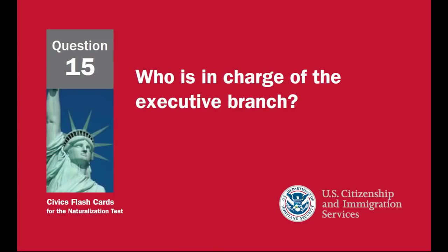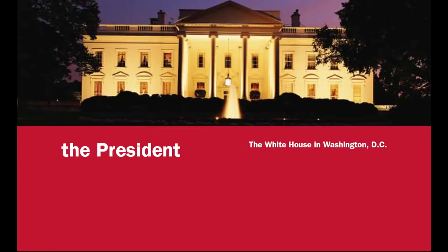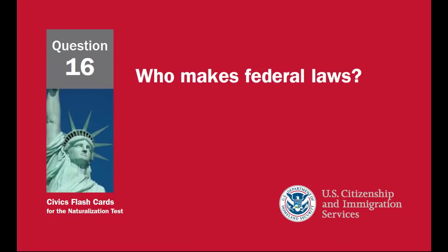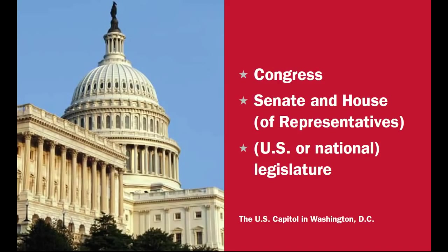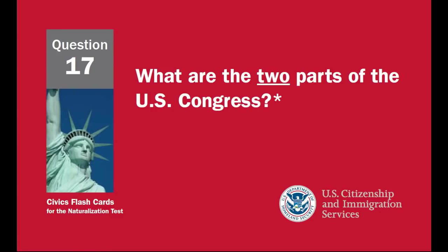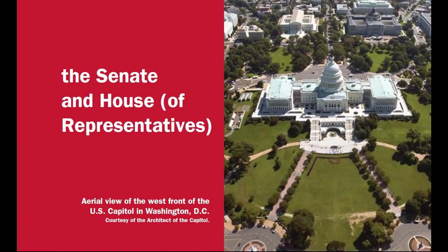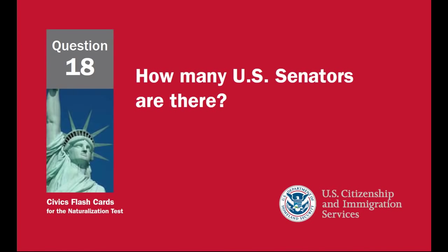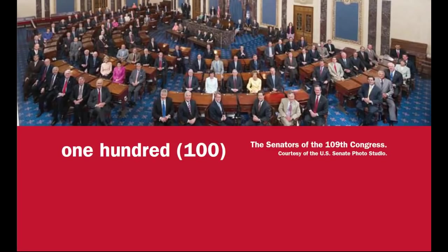Who is in charge of the executive branch? The president. Who makes federal laws? Congress — the Senate and House of Representatives, also called the U.S. or National Legislature. What are the two parts of the U.S. Congress? The Senate and House of Representatives. How many U.S. Senators are there? One hundred.